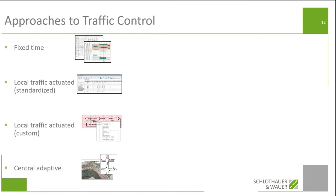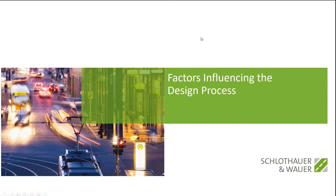We've established certain tasks we have to comply with, and we've established that there are different control types we can use. So how do we decide on certain tools? How do we decide what is the best approach for an individual intersection or for a project we're tasked with? This leads us into the main part of our presentation: factors influencing the design process. You can argue whether the factors I put here are comprehensive or if something is missing.